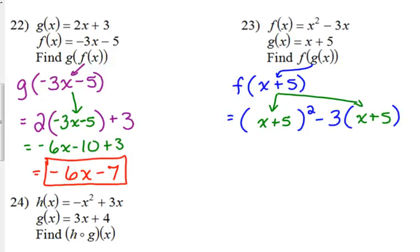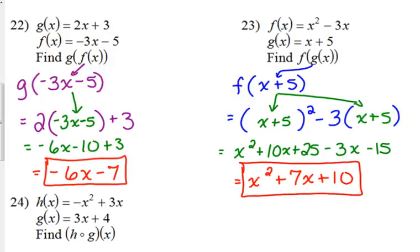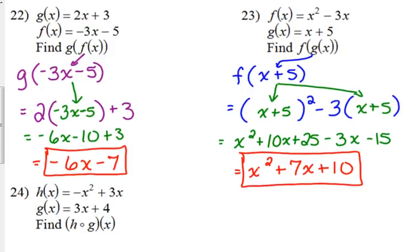Then, we simplify. x plus 5 squared. x squared plus 10x plus 25. I just didn't write it out twice. If you need to do that, I'm absolutely fine with that. I'm just saving space. Distribute the negative 3. Negative 3x minus 15. Combine like terms. x squared plus 7x plus 10.